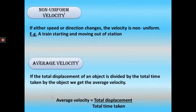Non-uniform velocity is just opposite to uniform velocity. If either speed or direction changes, the velocity is non-uniform. Example: a train starting and moving out of a station.